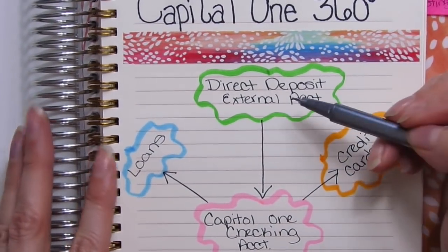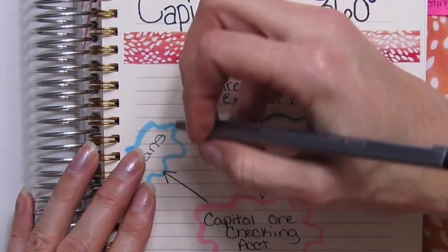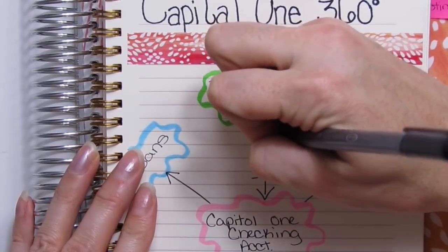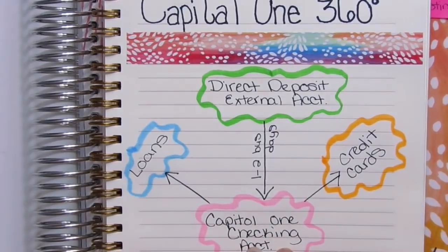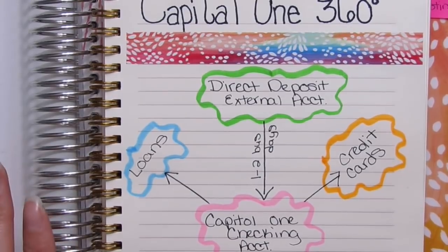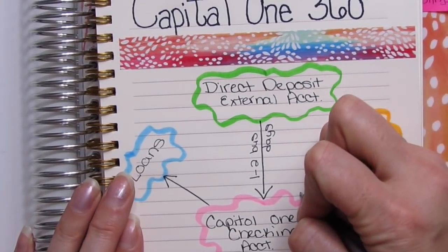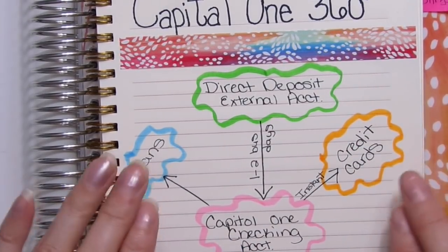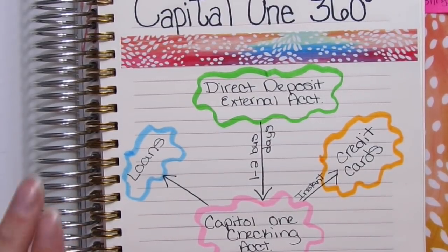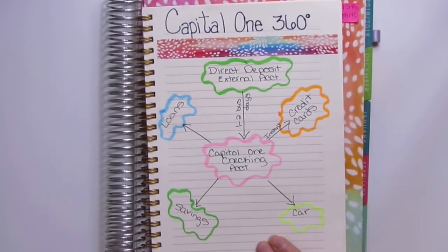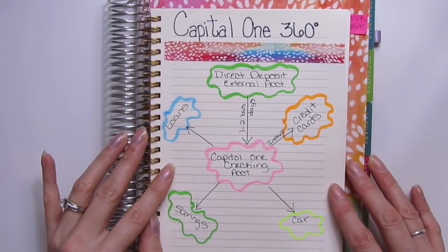So again, going from my external account to my Capital One checking account is one to two business days, and once it hits there, I can disperse it to however many savings accounts I want, in whatever amounts I want, and it's an instant transfer. All four accounts just instantly receive their amounts the second you hit the Transfer button. That is how I've been using Capital One with my cash envelopes.